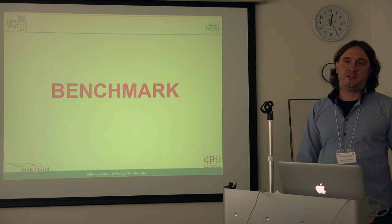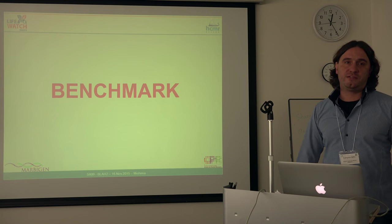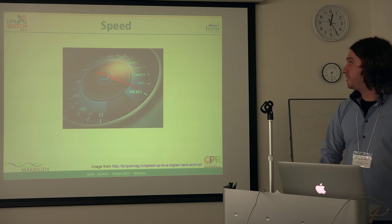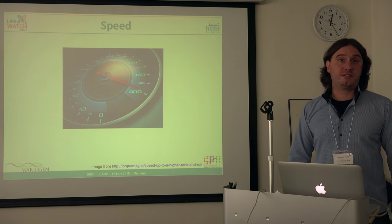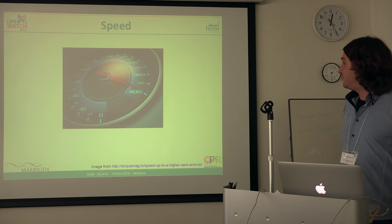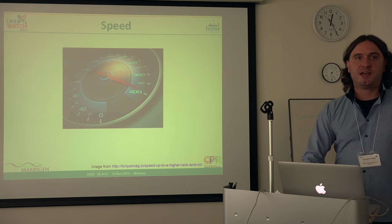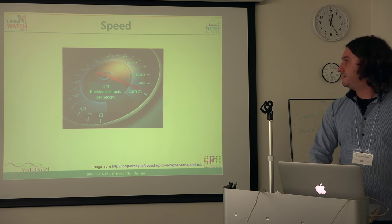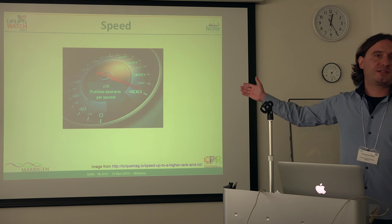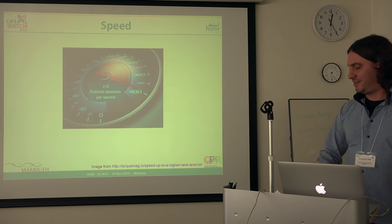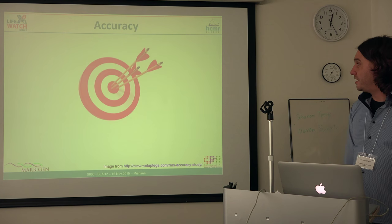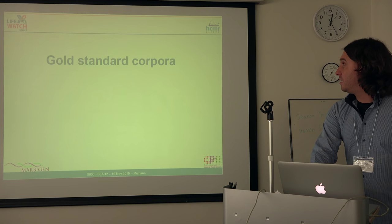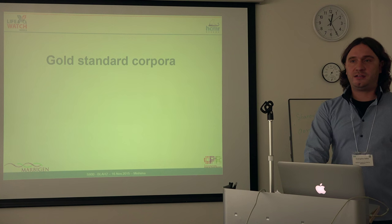It's very important when developing such systems to have a strategy on how to benchmark. There are two aspects you can benchmark. One is speed, and this is straightforward — in text mining you may count PubMed abstracts per second. The less straightforward aspect is accuracy, and this is why gold standard corpora are needed.